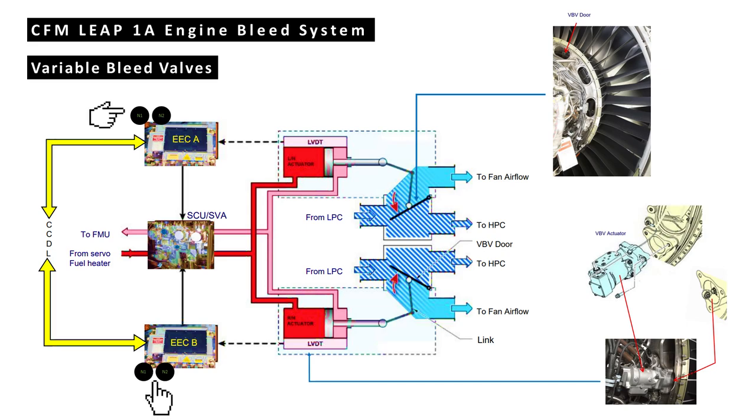The system includes two fuel operated actuators, one actuating ring, and eight VBV doors. The two actuators use fuel as muscle pressure which has been regulated by its torque motor inside the split control unit servo valve assembly.